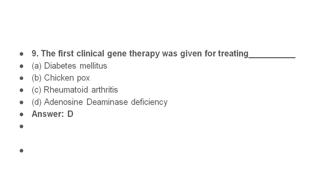The first clinical gene therapy was ADA therapy. In 1990, there was a 4-year-old girl with adenosine deaminase deficiency. This was the first clinical gene therapy case.